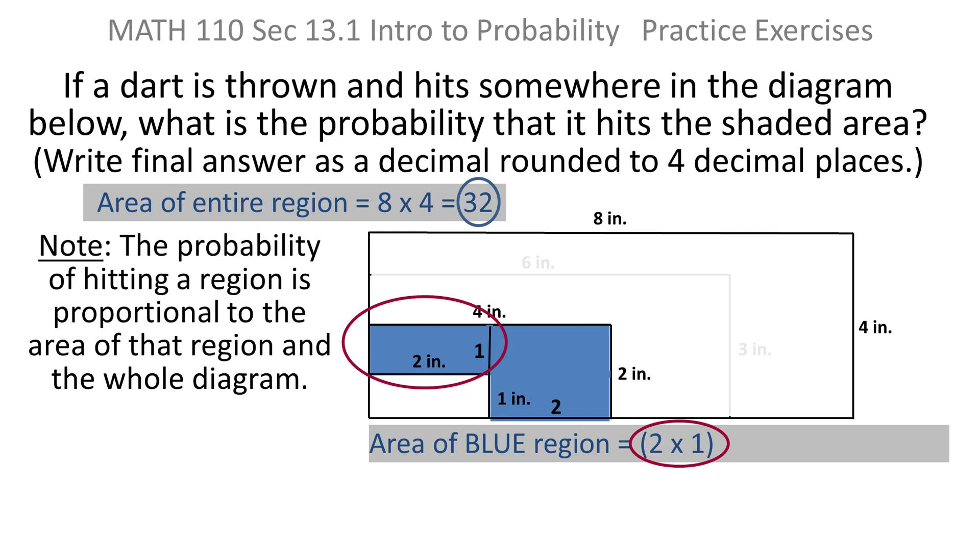So what I have, again, going back to the first rectangle, is a two by one rectangle and the area is two times one. For the second, the bigger rectangle, it's actually two by two, which makes it actually a square. And once I calculate those two products and add them together, I'll have the area of the blue region.